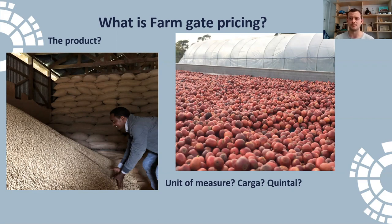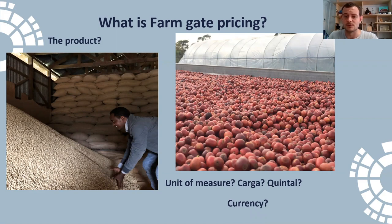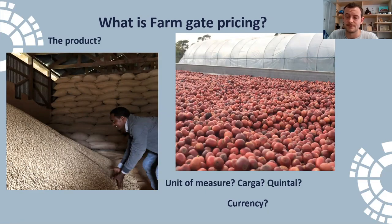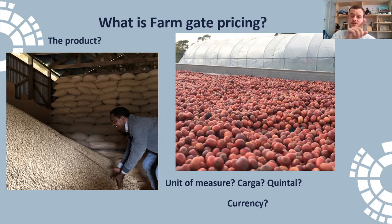Ethiopian birr per kilo and Guatemalan quetzals per quintal are obviously very different, so we need to be able to contextualize what we're talking about. If we assume we know the unit of measure and the product, there's also the currency to take into account. A farm gate price, because it's at the farm gate level, will be paid in local currency. So if you're seeing a farm gate price in dollars, whoever gave you that information has had to make some assumptions to convert from the local currency price to the dollar price.